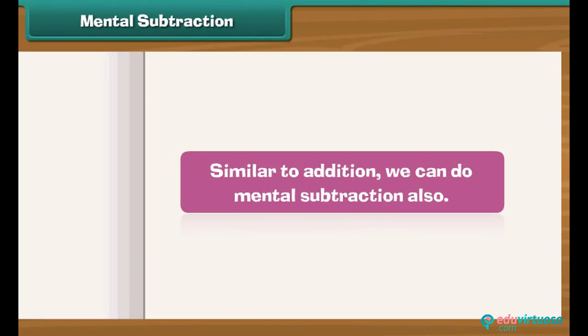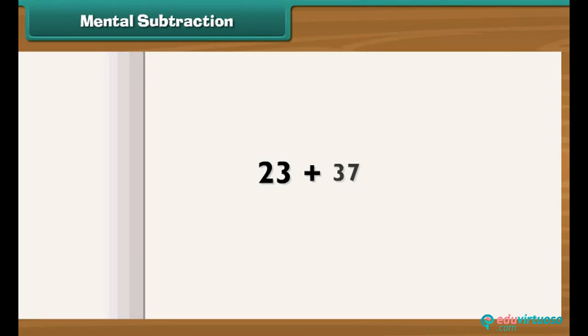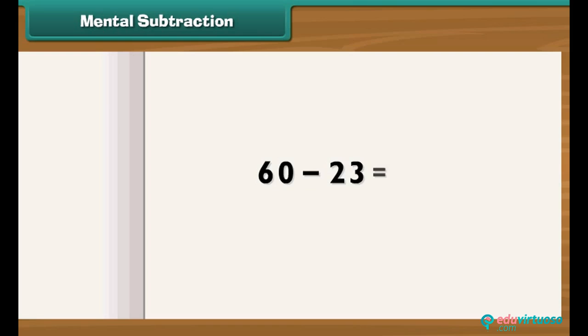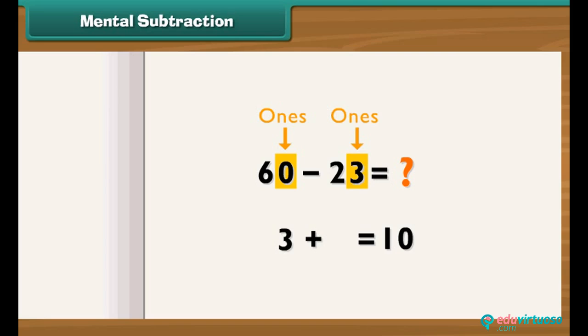Mental subtraction: Similar to addition, we can do mental subtraction. In subtraction, we are given the sum and we have to find one of the numbers. For example, the ones place of 60 is 0, and the ones place of one number is 3. We need to find what should be added to 3 to make 10 — the answer is 7. So the ones place of the second number is 7.